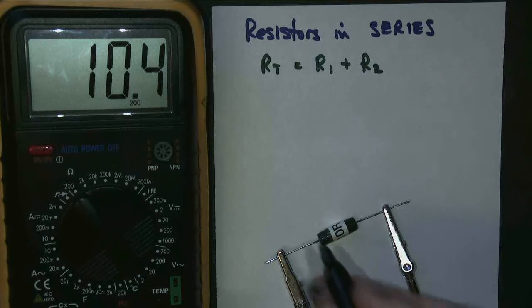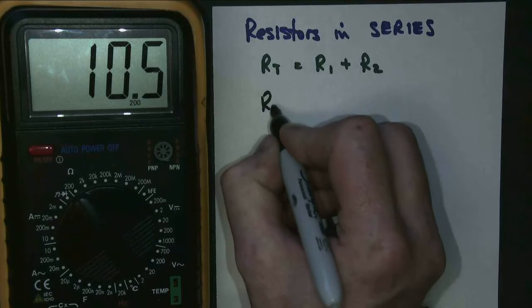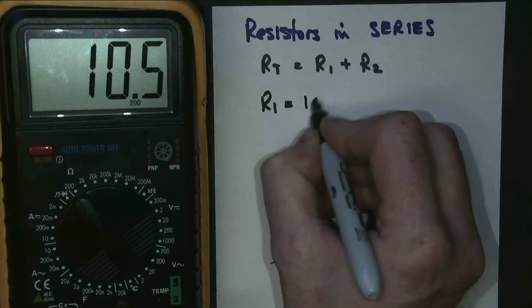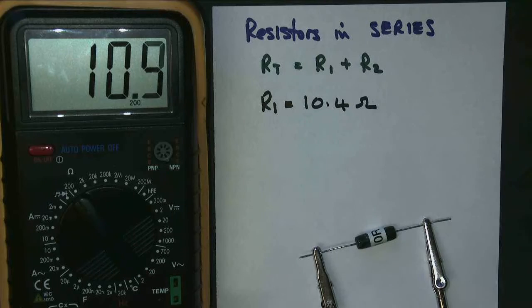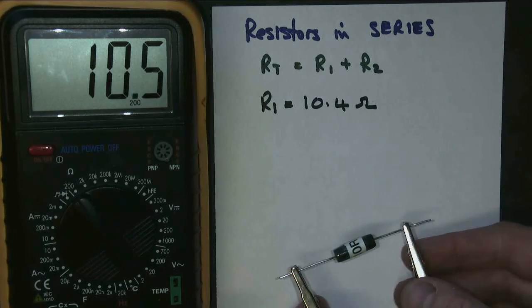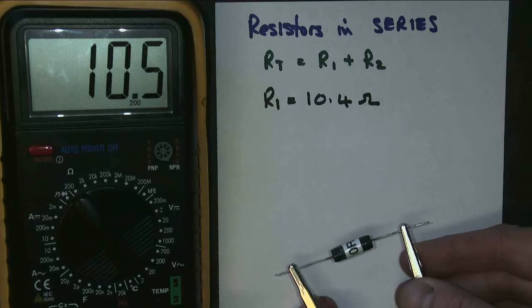So according to my multimeter, R1, my first resistor is about 10.4 ohms. Why is it not exactly 10 ohms? Well, they have a 5% tolerance. So 5% of 10 is 0.5, so that's just about on the edge of its tolerance.